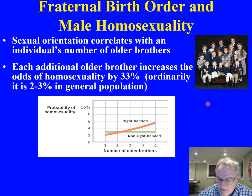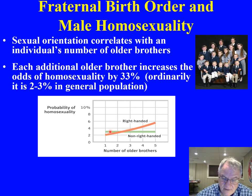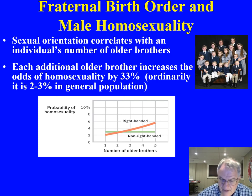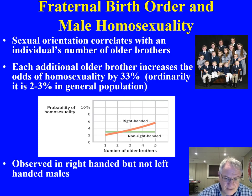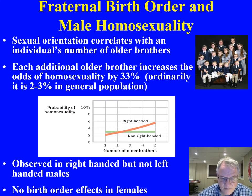Here is the data in terms of probability of homosexuality versus number of older brothers: the more older brothers you have, the greater the likelihood of being homosexual. This effect is observed in right-handed males but not in left-handed males. There are no such birth order effects that occur in females in terms of lesbianism. This is one of the most well-documented findings in the whole field of the study of sexual behavior.